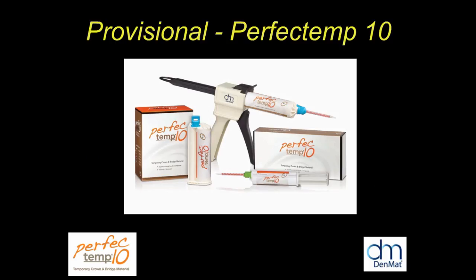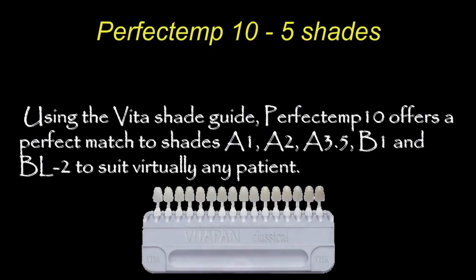One of the newer bis-GMA temporary materials is called Perfect Temp. I used the original version for a long time — it was a good product but had some of the same disadvantages as its contemporaries. Now they've really revolutionized it. In terms of shades, you've got five good shades that will cover most of your aesthetic ranges for a temporary. For everyday crown and bridge for a short period of time, these shades cover the right spectrum, including a bleach shade.